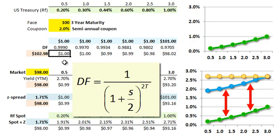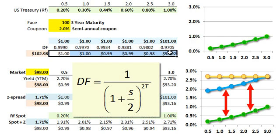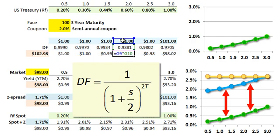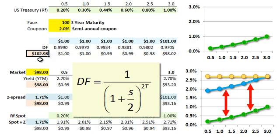These discount factors are multipliers we use to convert the series of future values into present values. For example, at two years, my $1 multiplied by my discount factor gives the present value for that cash flow. Summing those six present values, the discounted present value — the model price of this bond — is $102.98.